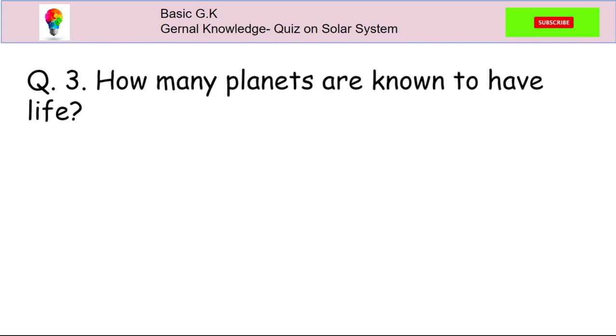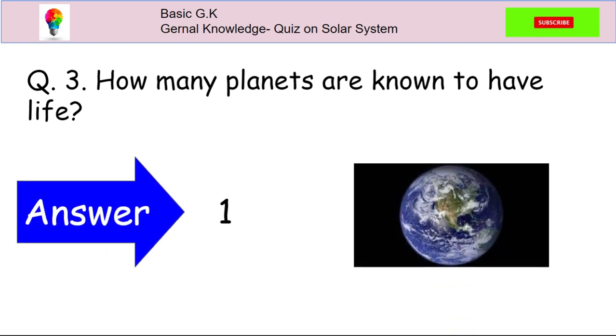Question 3. How many planets are known to have life? The answer is 1. That one planet is known as Earth.